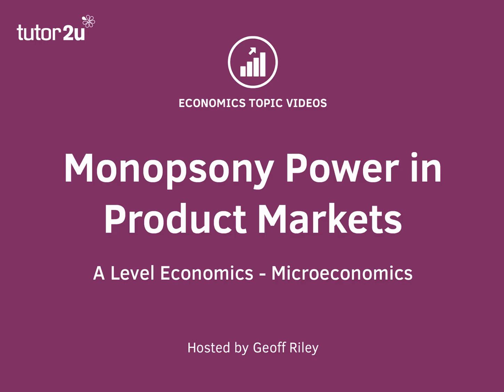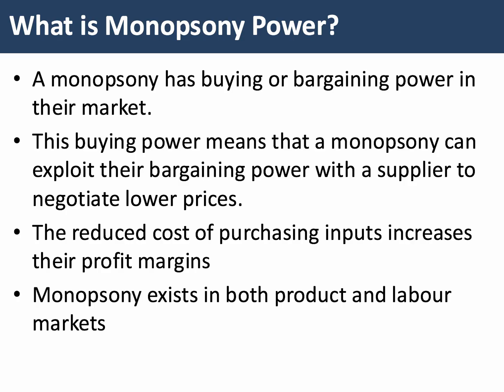In this topic video we're going to focus on monopsony power. Most students are familiar with the idea of monopoly but relatively few have considered the other side of the market - monopsony. A monopsonist is a business that has buying or bargaining power in their market, and this buying power means that a monopsony business can exploit that and bring down the cost of buying their inputs from a supplier. The reduced cost of purchasing raw materials and components increases their profit margins.